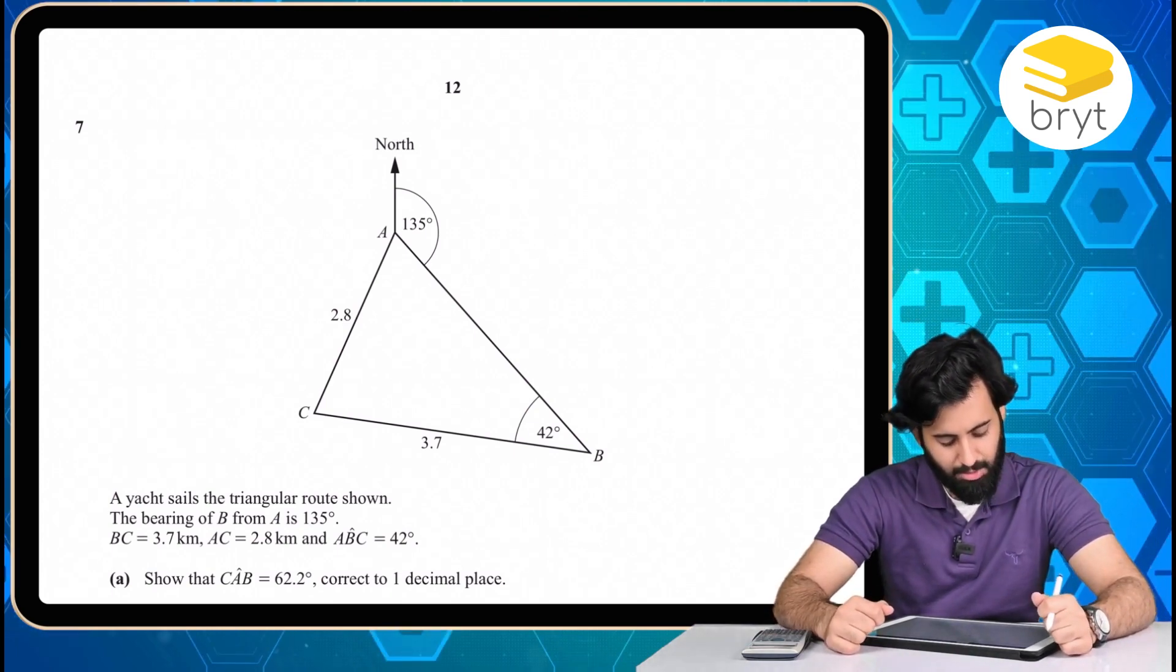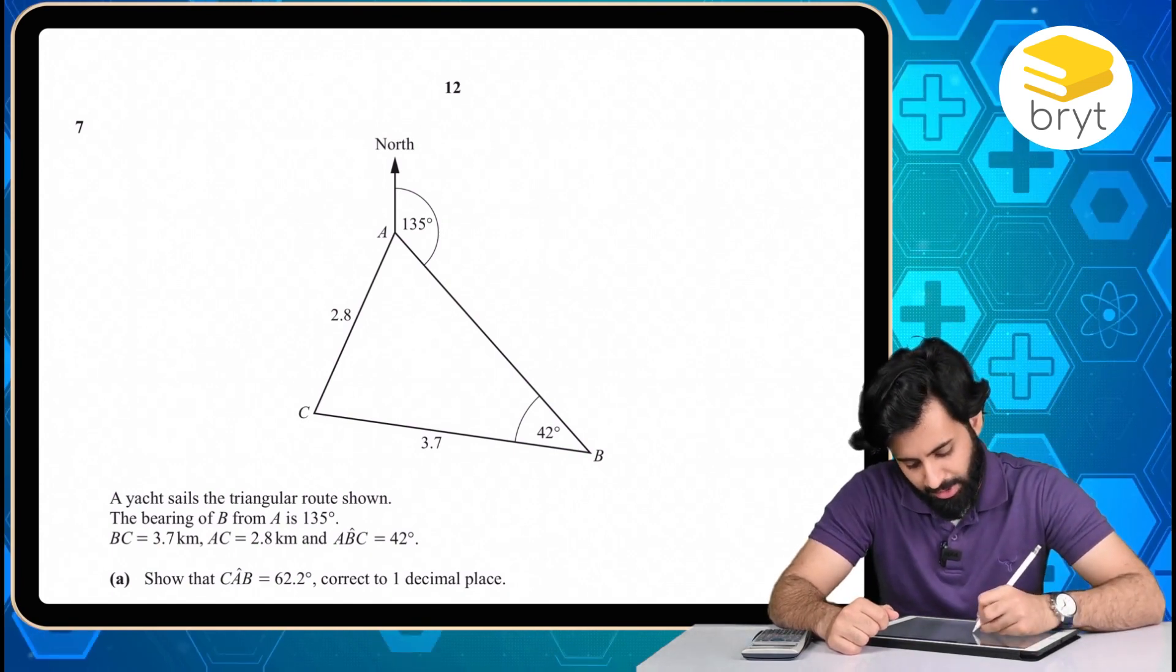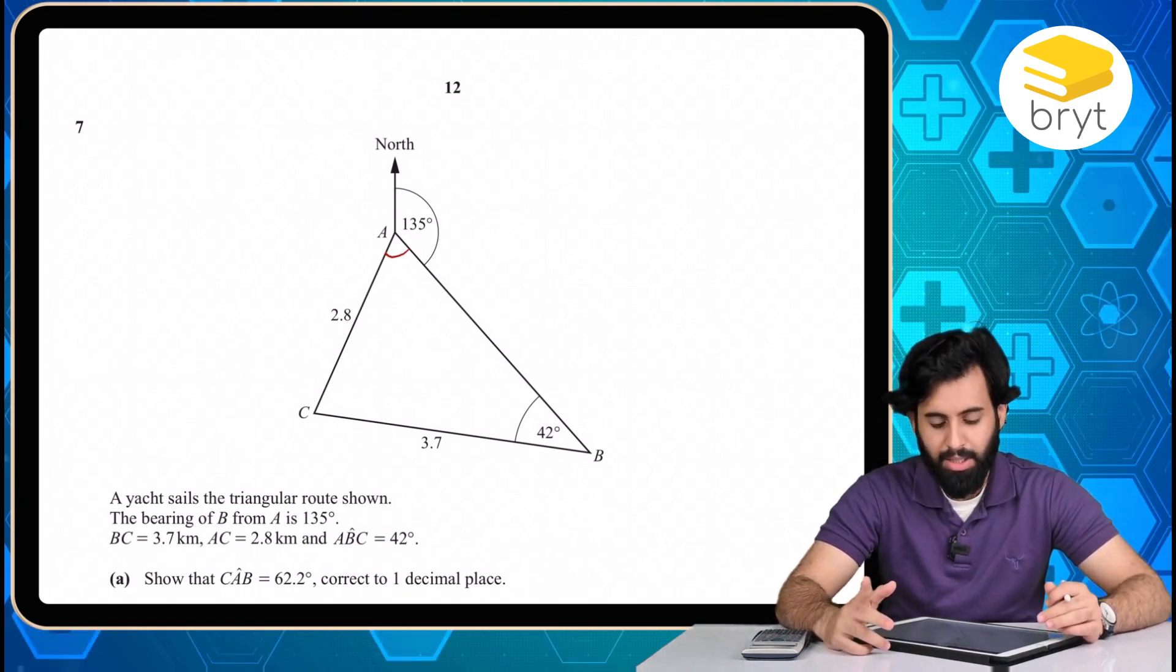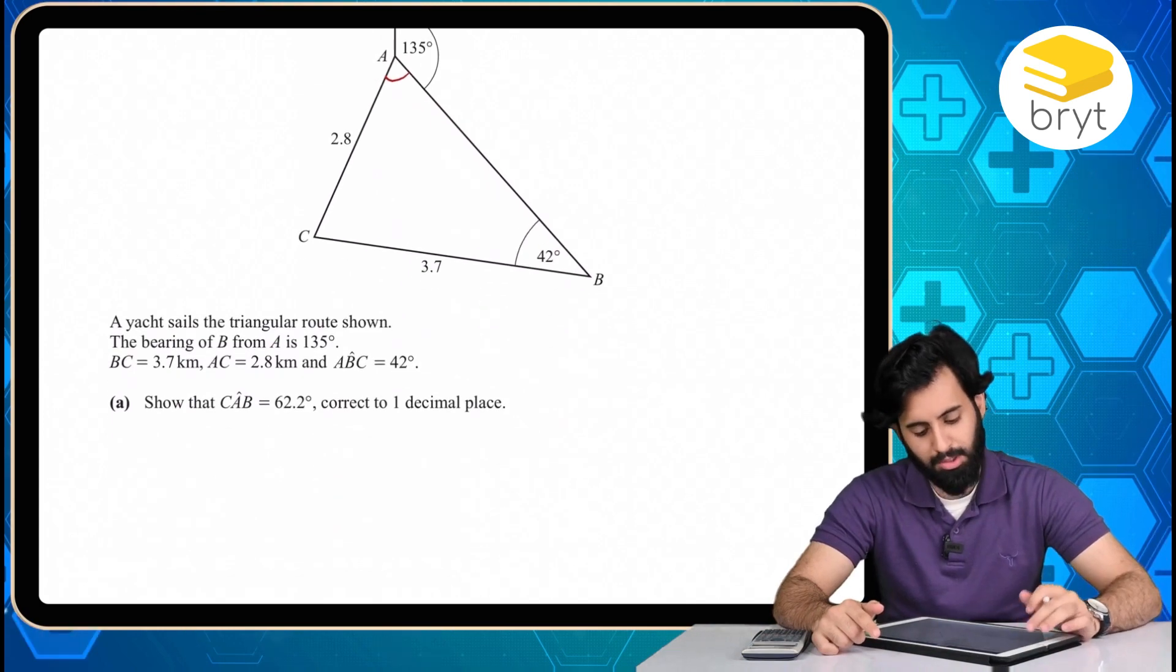Then it says show that CAB is equal to 62.2 degrees, correct to one decimal place. So CAB basically means that we need to work out this angle. Okay, so what do we have? We have two sides and a non-included angle, which means that we'll have to use sine rule.